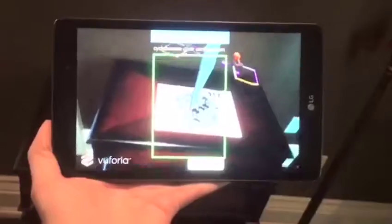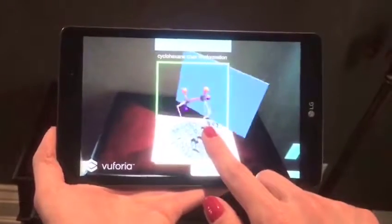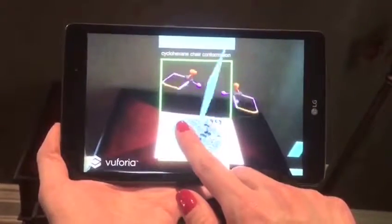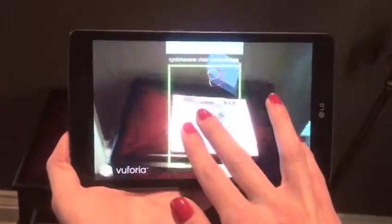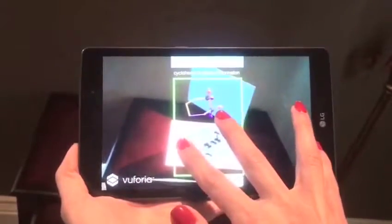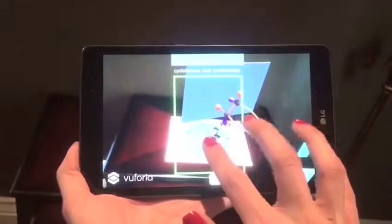This next augmented reality image is a cyclohexane chair as well as its mirror image, and you can visualize from different directions as well as use your fingers to zoom the image in and out for a bigger or smaller perspective.